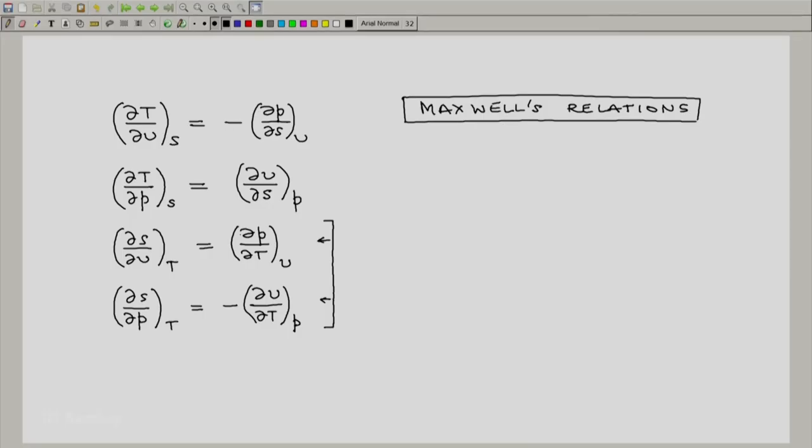Now, Maxwell's relations is the name given not only to these four relations but even to their reciprocals. For example, you take this equation and using the partial derivative relation that partial of x with respect to y at constant z equals reciprocal of partial of y with respect to x at constant z. It is a simple reciprocity relation.